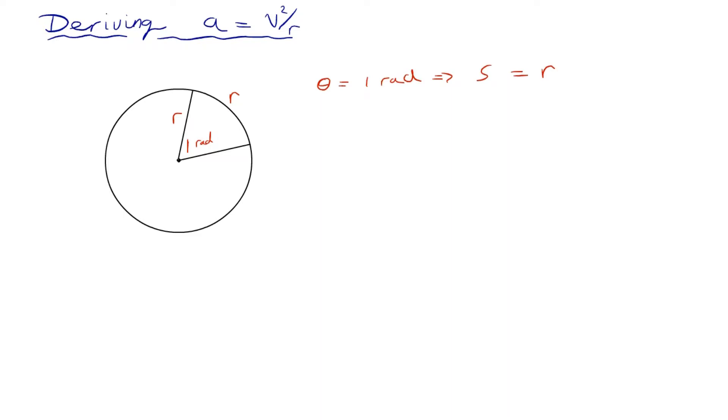But of course what that means is that's true for any number of radians. If the angle is two radians, then the arc length that subtends it is going to be two times the radius.